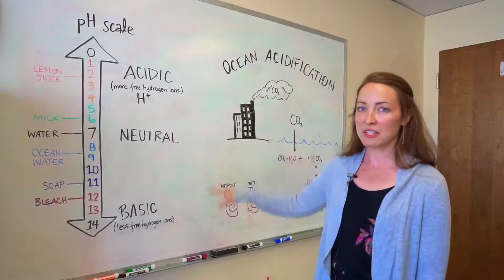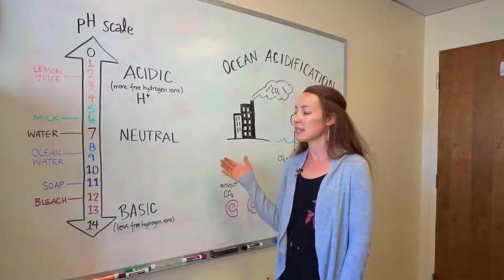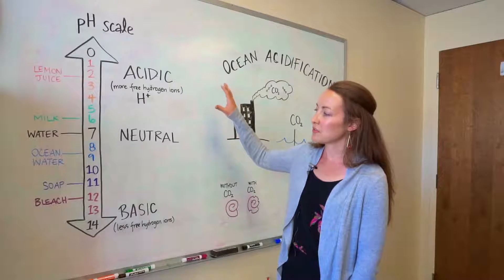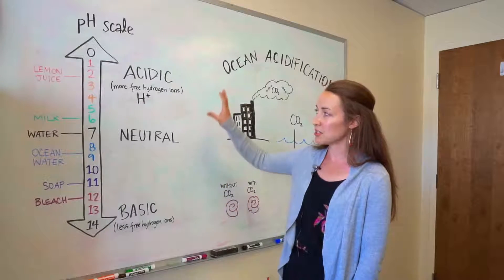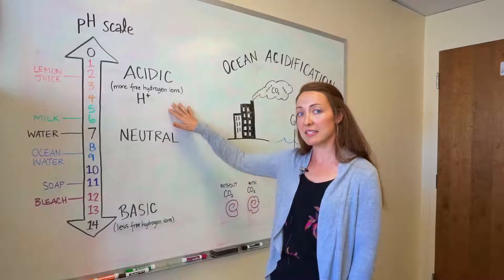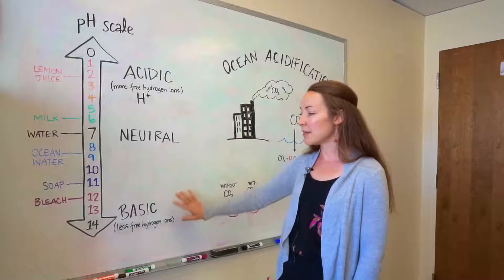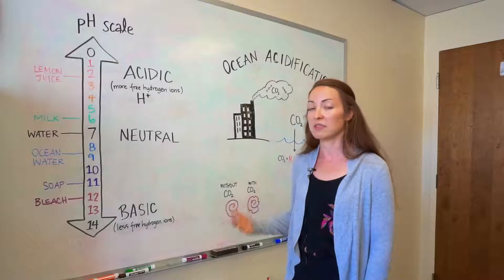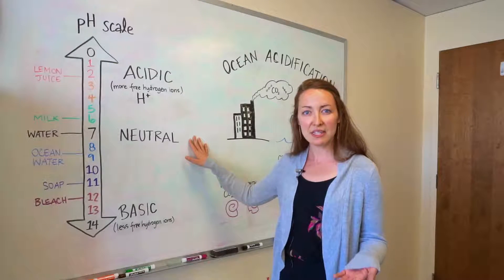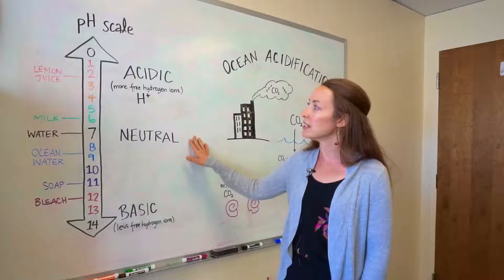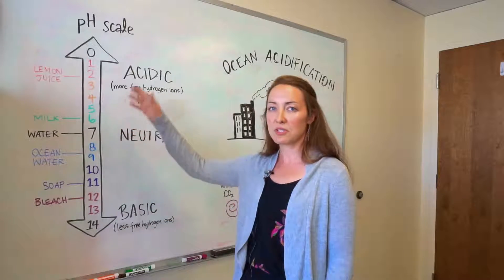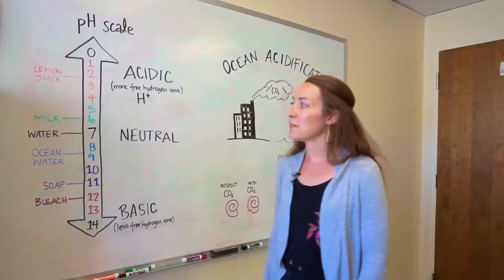On the left side of the board we have the pH scale, which is what we use to determine how acidic or basic a solution or liquid is. The pH scale ranges from 0 to 14. pH numbers that are really low tend to be more acidic — this means there's more free hydrogen ions in the solution. High pH numbers are basic, meaning there's less free hydrogen ions. A pH of 7 is neutral; the water we drink is usually about a pH of 7.